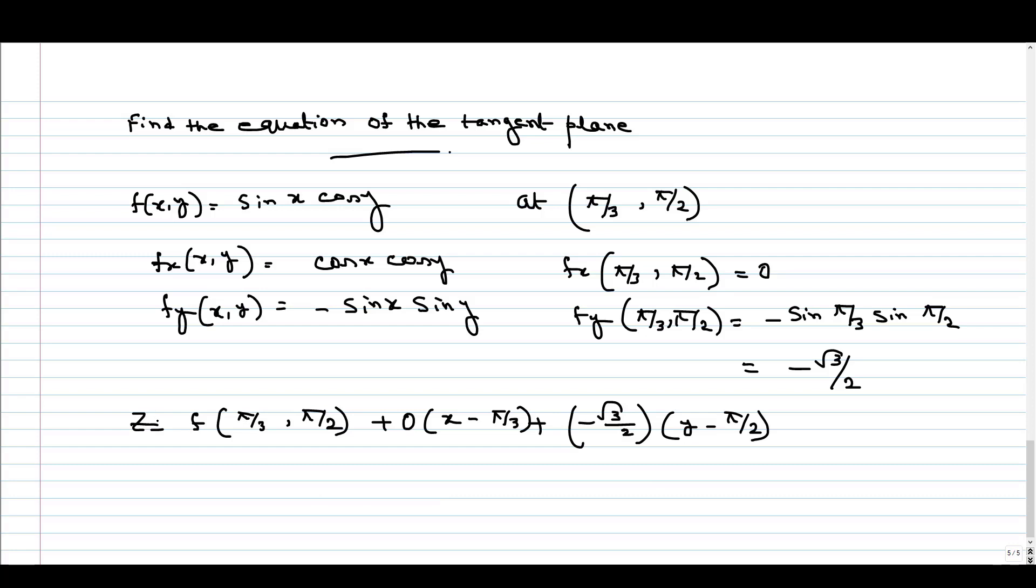When we evaluate f at (π/3, π/2), cos(π/2) equals 0, so the first two terms equal 0. The equation becomes z = -√3/2(y - π/2).